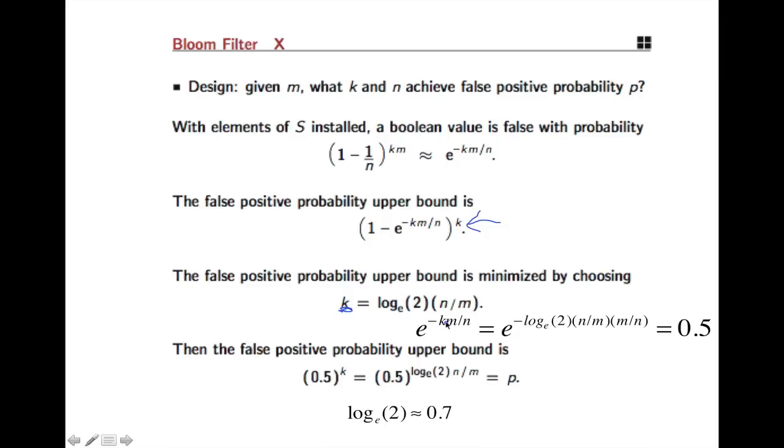And if you plug in this value into e to the minus, if you plug in this value k here into the e to the minus km over n, then you just get e to this expression, and then multiplied by n over m, and then multiplied by m over n. So this cancels with this, and we're left with just e to the minus log e of 2, which is by definition half. So we have that everything inside here is a half. And now the probability of making a mistake is a half to the k. So it's half to this ratio.